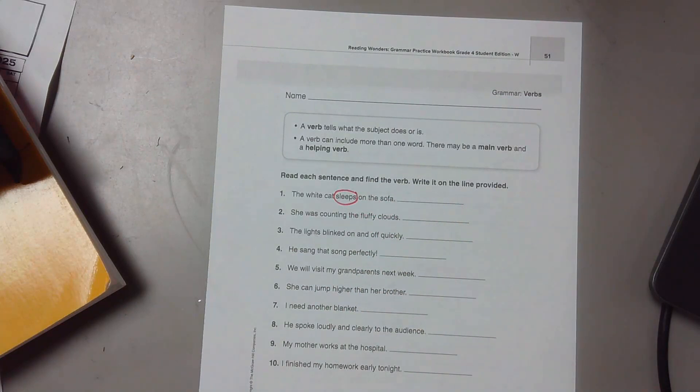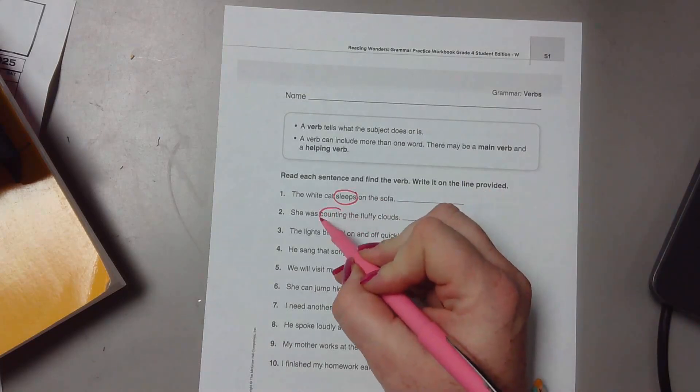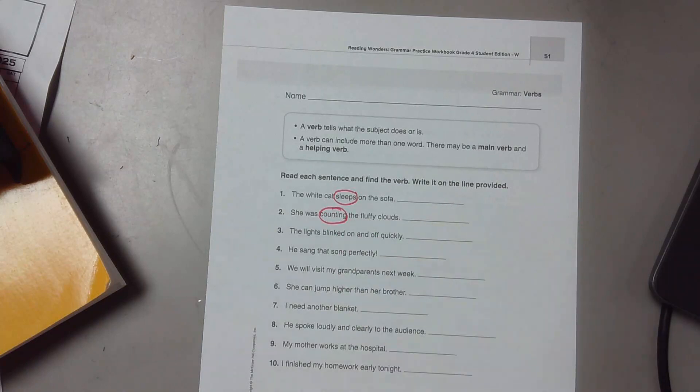Number two: she was counting the fluffy clouds. What was she doing? Counting. Number three: the lights blinked on and off quickly. Blinked.